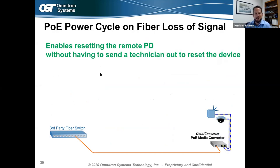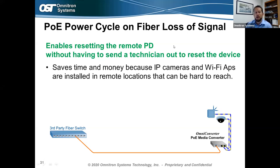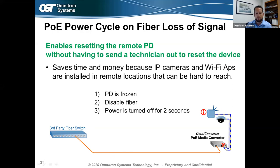A nice feature of Omni Converter PoE media converters is the ability to power-cycle a device remotely by sensing fiber loss on the signal. Cameras or Wi-Fi devices can get frozen up, and in the past a technician would have to manually reboot or power-cycle the equipment. With this feature, when the powered device freezes you can disable the fiber — either by unplugging the fiber port at the switch or disabling it through management. The power is then turned off for two seconds from the PoE ports, allowing the PD to restart.